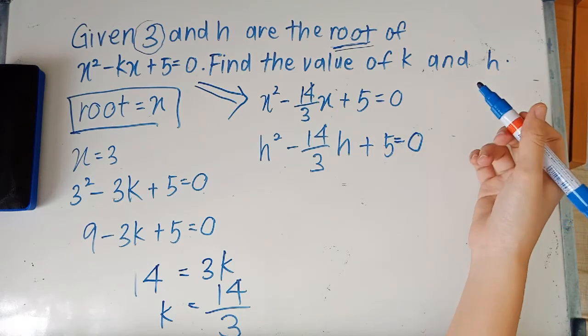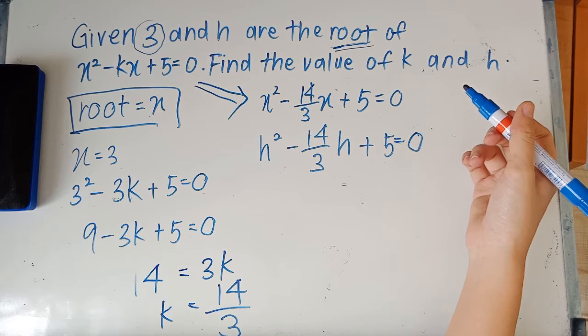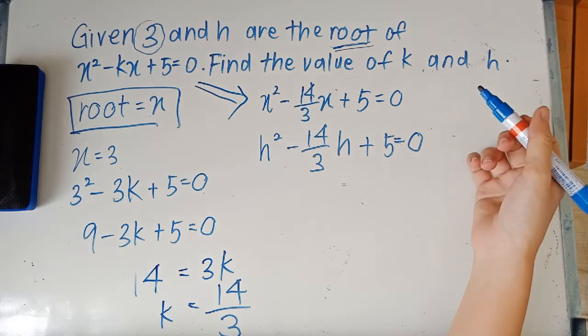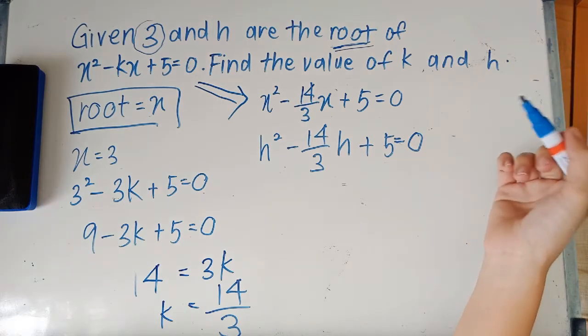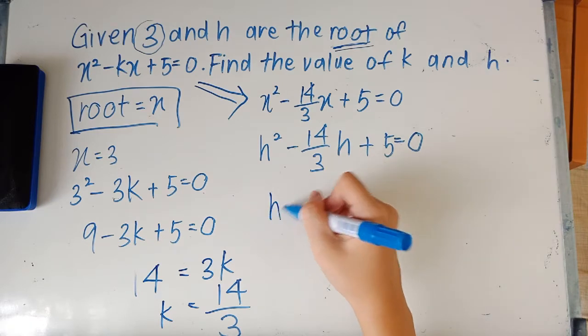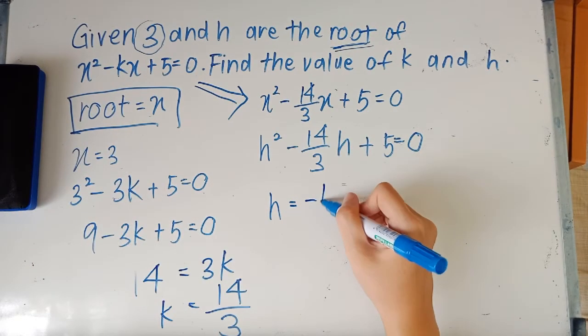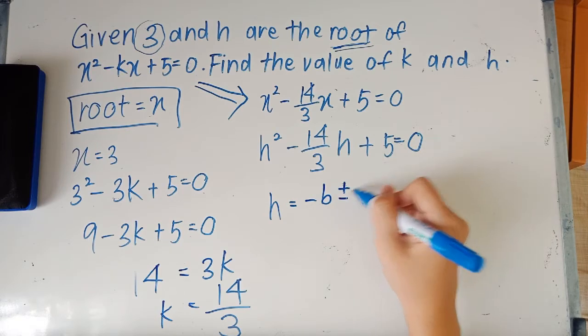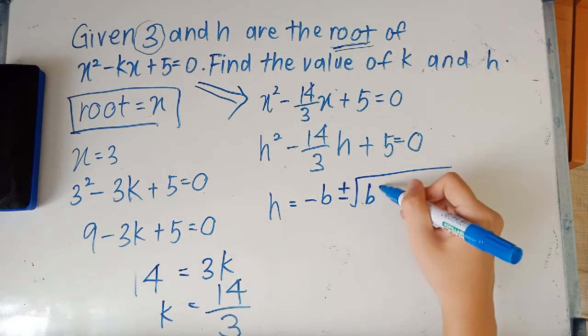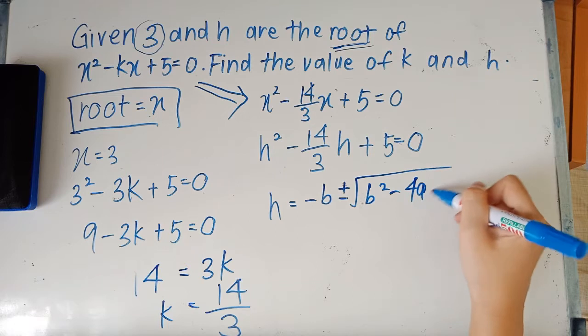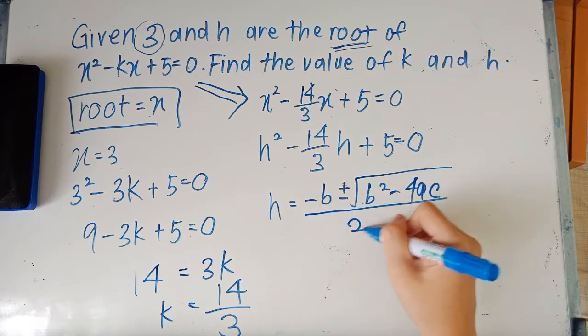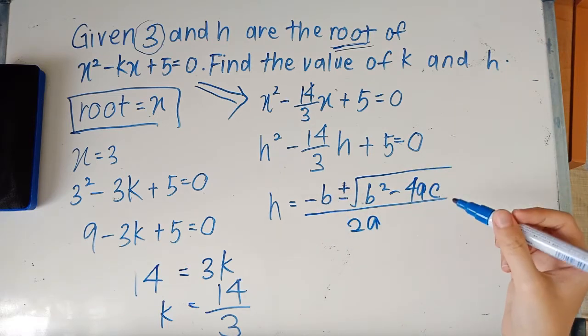And how you would solve this is you would use the quadratic equation, which is another thing that you should definitely memorize. So the quadratic equation that you have to memorize is: negative b plus minus square root b² - 4ac over 2a.